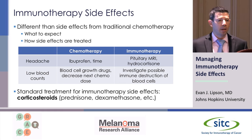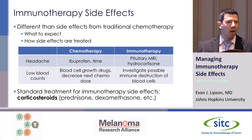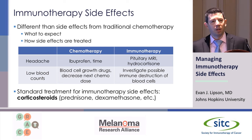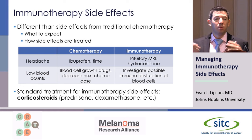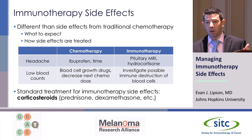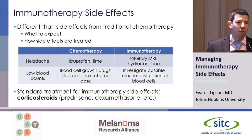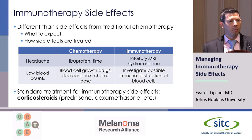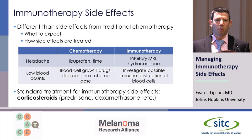Same thing with low blood counts. Everybody on chemotherapy gets low blood counts — we expect it, it's going to come back if you give them enough time. But if you get a low blood cell count on immunotherapy, the investigation begins about whether the immune system is destroying the cells that are making blood cells in the body. So it's very different. The standard treatment for immunotherapy side effects are corticosteroids — drugs like prednisone, dexamethasone, decadron, methylprednisolone.